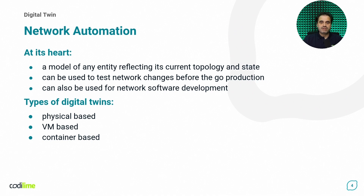There are several types of digital twins. Starting with physical ones, where dedicated physical routers, switches, and other devices are used. This approach is great when you need an identical environment down to ASIC behavior. However, this approach is expensive, not flexible — the need for physical recabling each time alone is significant — and takes a lot of space and power.